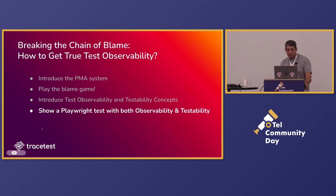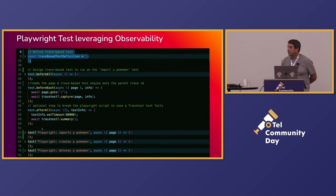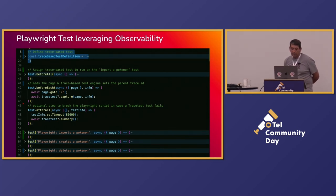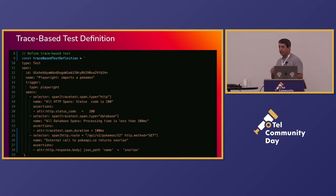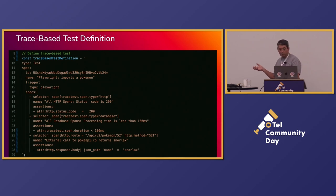So let's look at a Playwright test using both observability and testability. We're going to take the test that we ran a minute ago and add a little bit of information to define a trace-based test for it. Up until now, everything's been very general — it didn't matter if you had Jaeger or anything. This is a specific format for the tool I represent, but other tools that have done trace-based testing have similar concepts. There's always the concept of a trigger — how are you going to trigger the test? And then there's the concept of a selector.